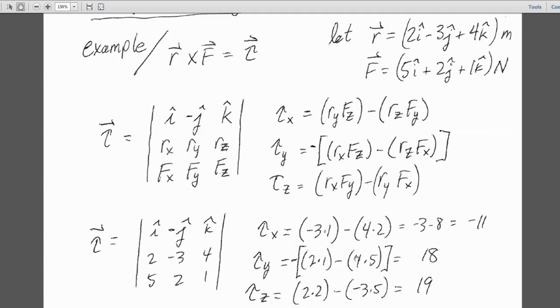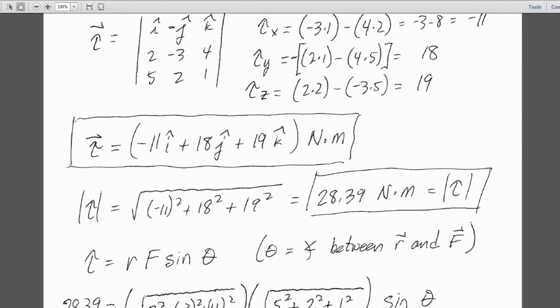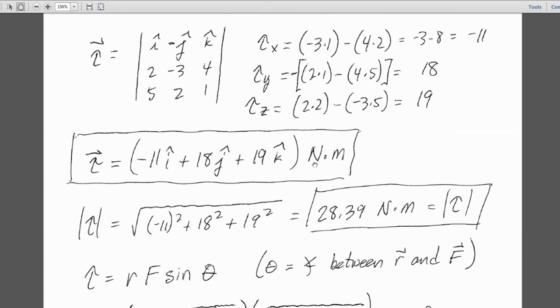plug in the numbers, and we come up with our answers for the magnitude of the X component of the torque is negative 11, 18 for the Y component, and 19 for the Z component. So that would give me my answer in unit vector notation for my torque like this.